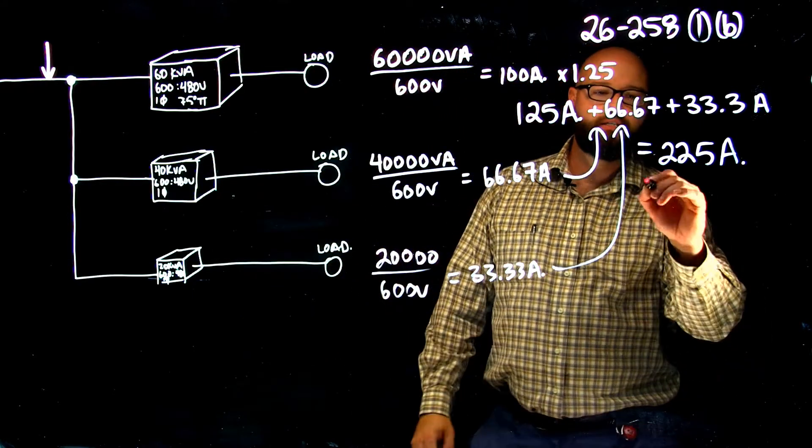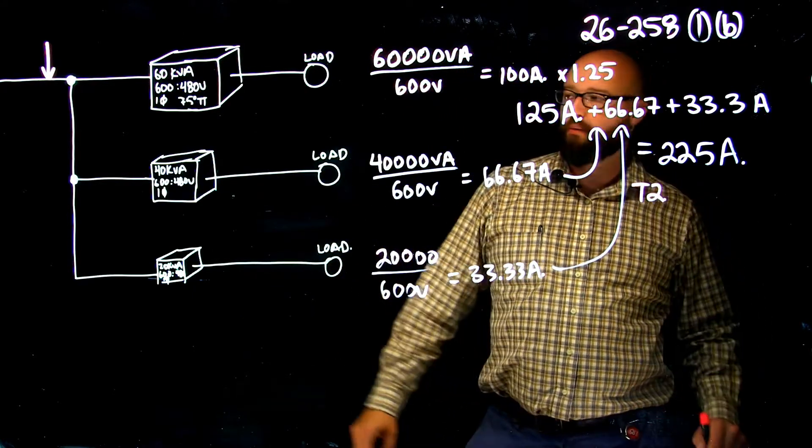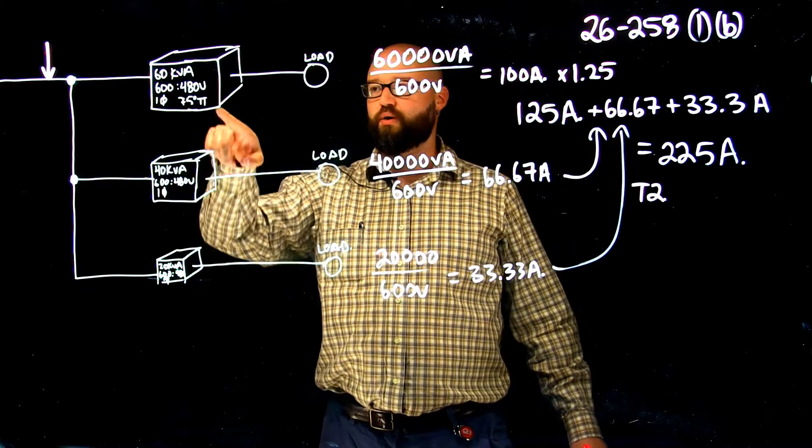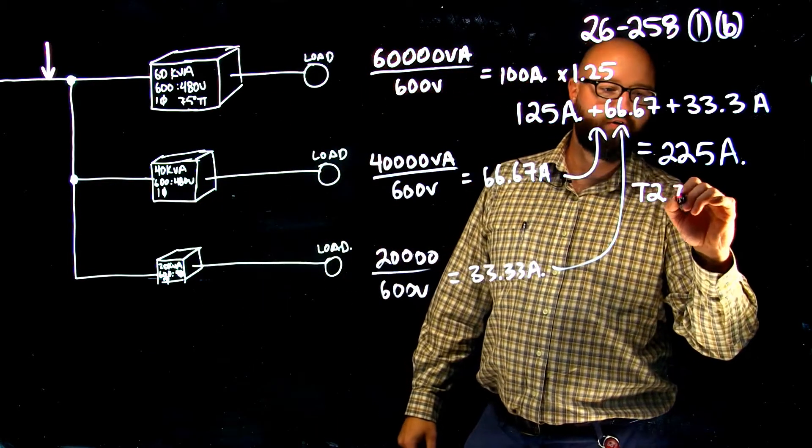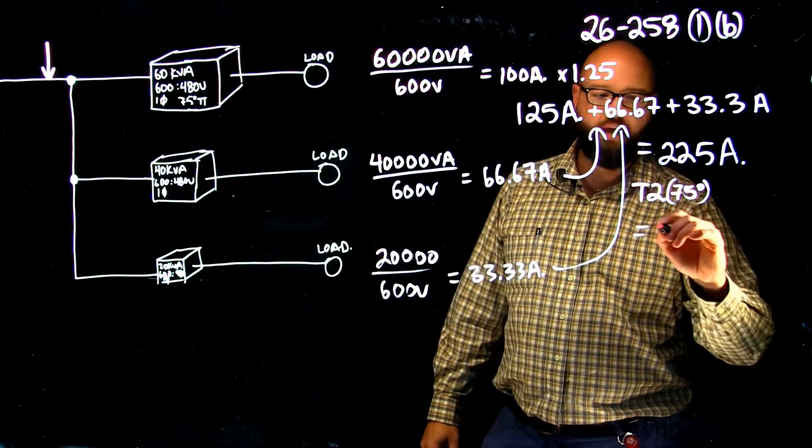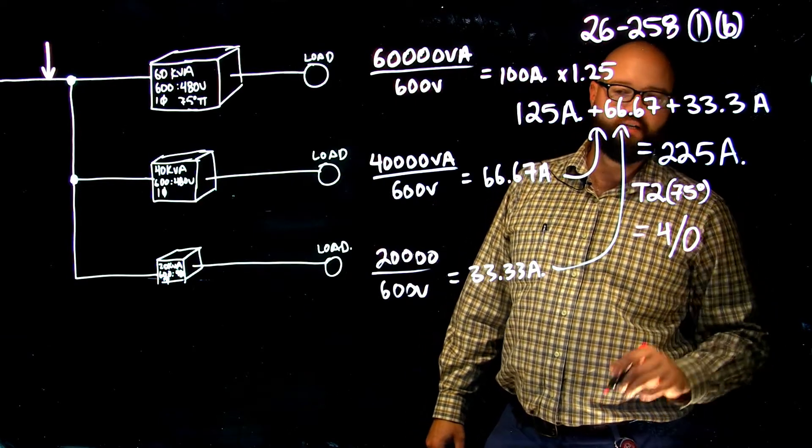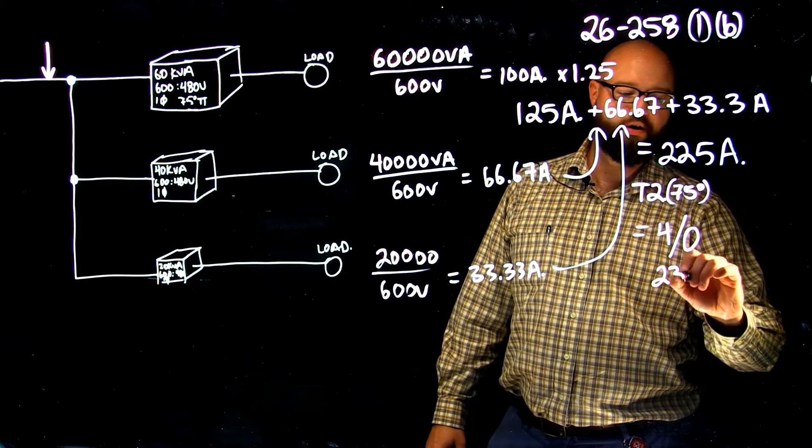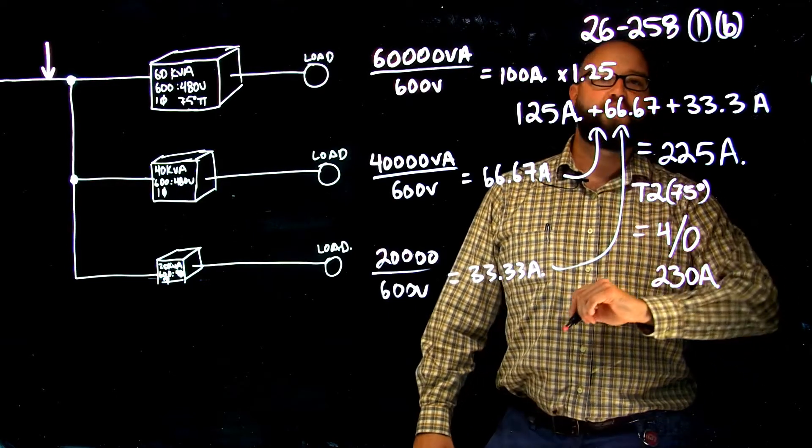So, we're going to take that to table two, and we're always keeping in mind the termination temperatures. We have a 75 degree termination temperature. So, we're going to go to our 75 degree column. We are going to select a 4-0 conductor, good for 230 amps to supply that group of transformers.